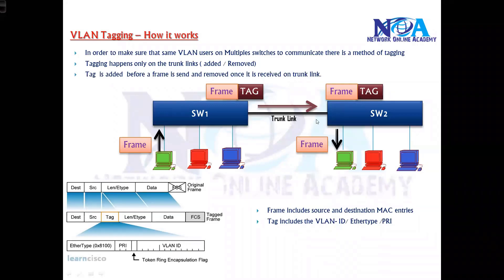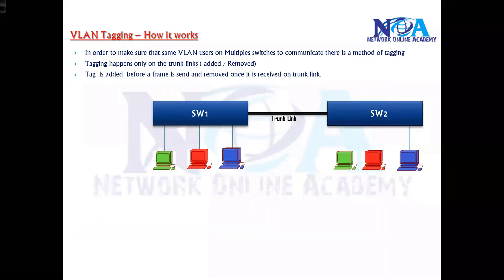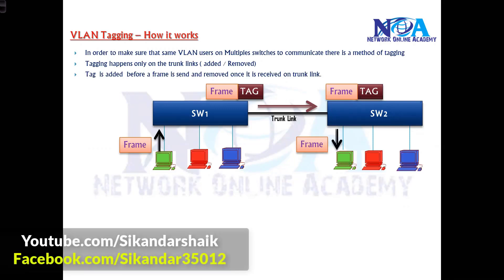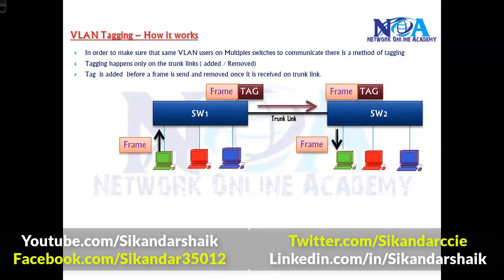The main thing to understand is: when the switch receives a frame, it will be a normal frame containing source and destination MACs. When it is sent over the trunk link, a tag is added. This tag is used to identify which VLAN the frame belongs to. When Switch 2 receives it, it identifies the VLAN and forwards the frame only to devices within that VLAN, either as unicast or broadcast. Tagging is used for identifying VLANs between switches — the tag is added on one side and removed on the other.